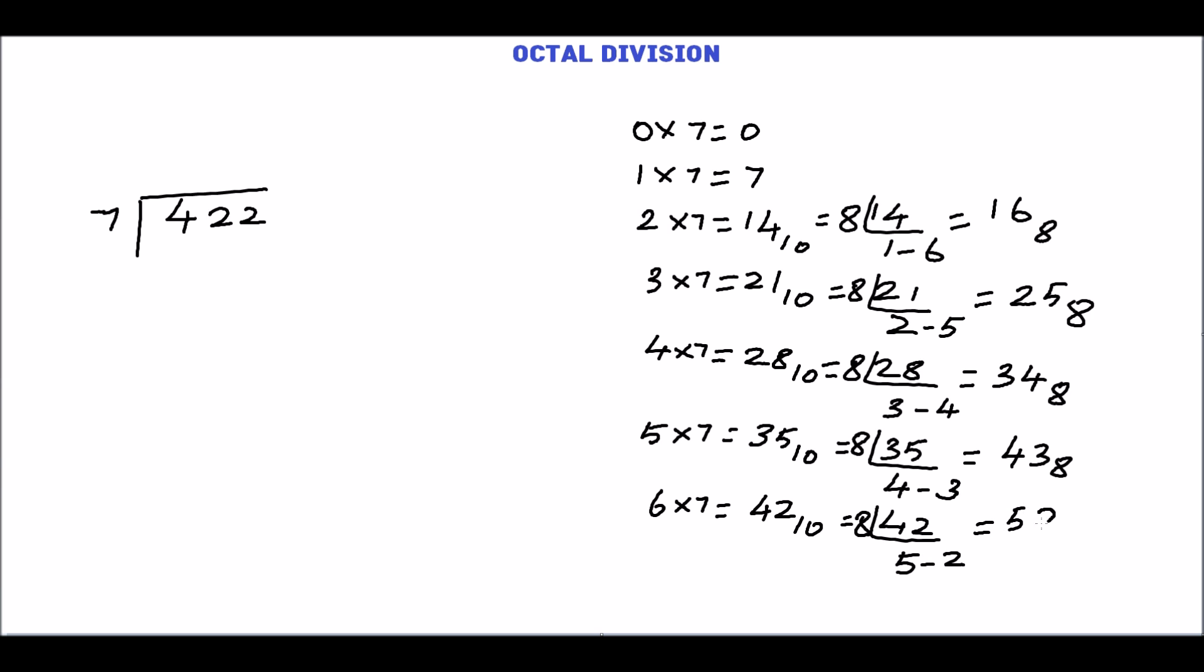So the equivalent octal number is 52. 7 times 7 is 49 in decimal. Convert this. Quotient is 6 and the remainder is 1. 61 base 8.